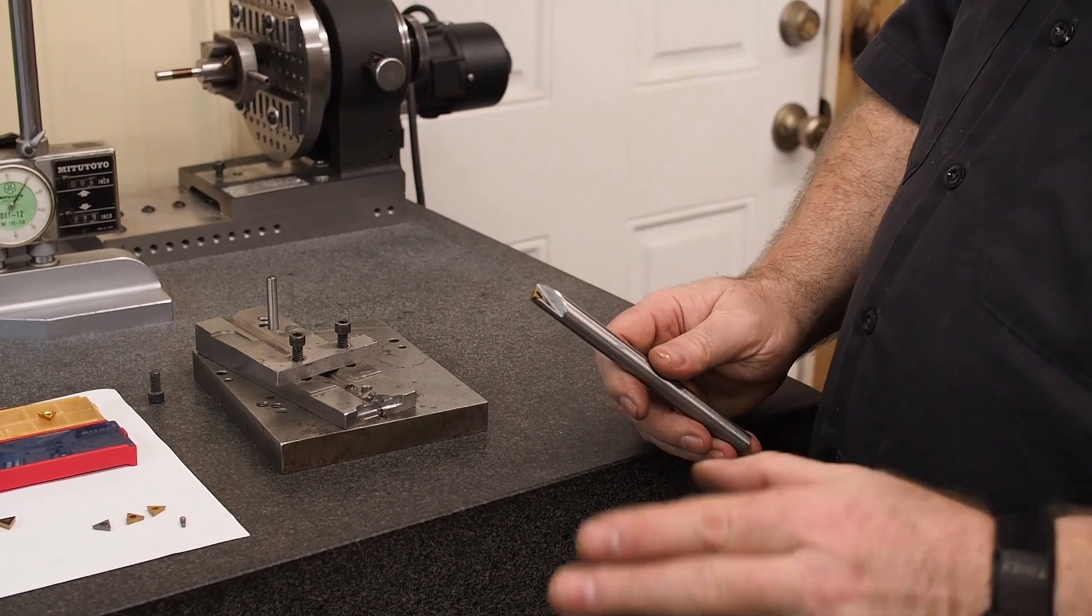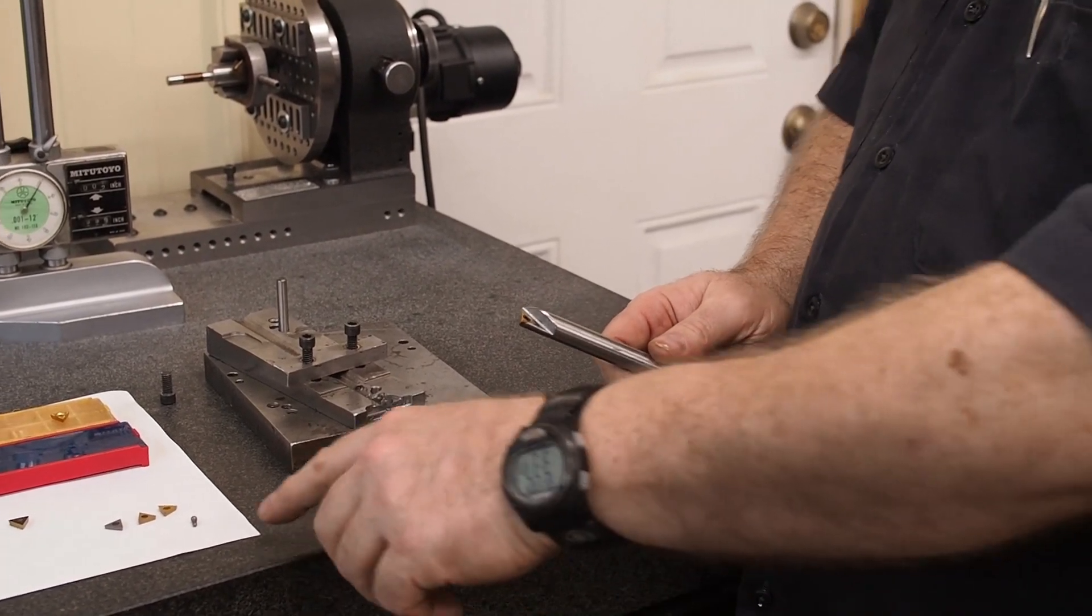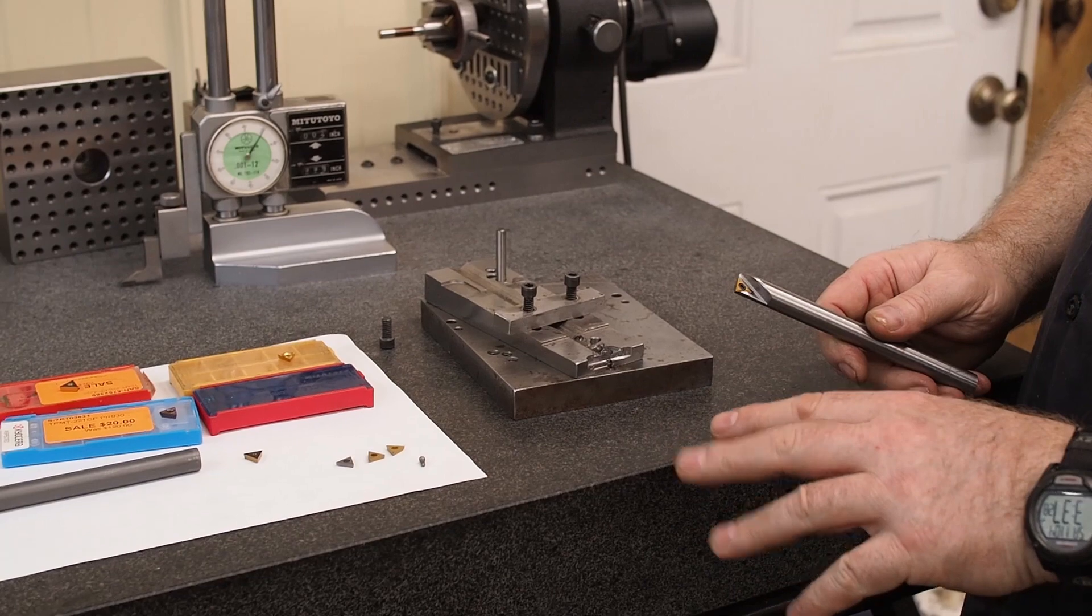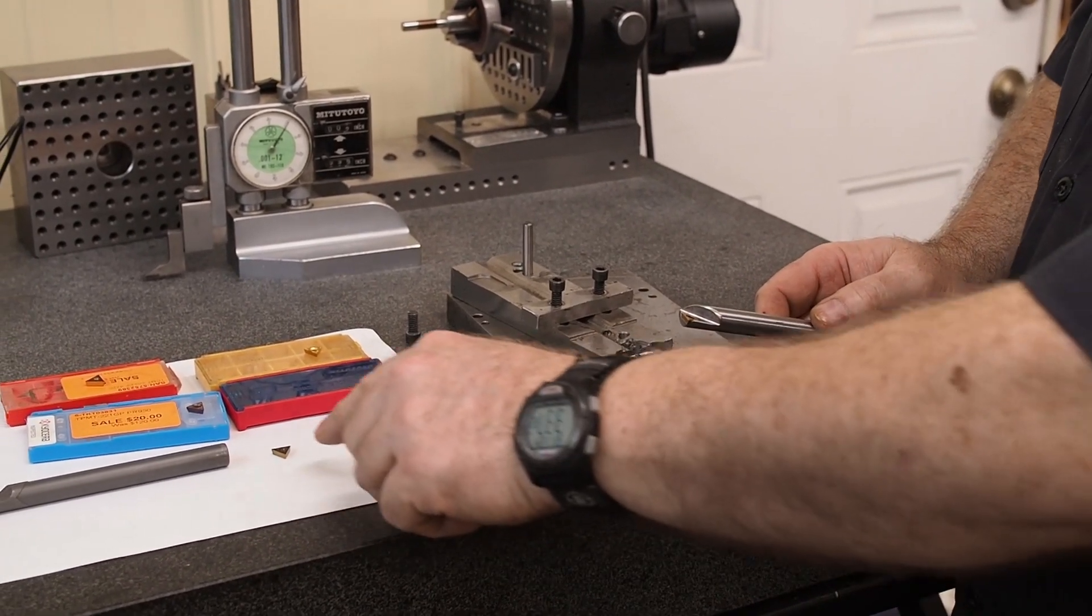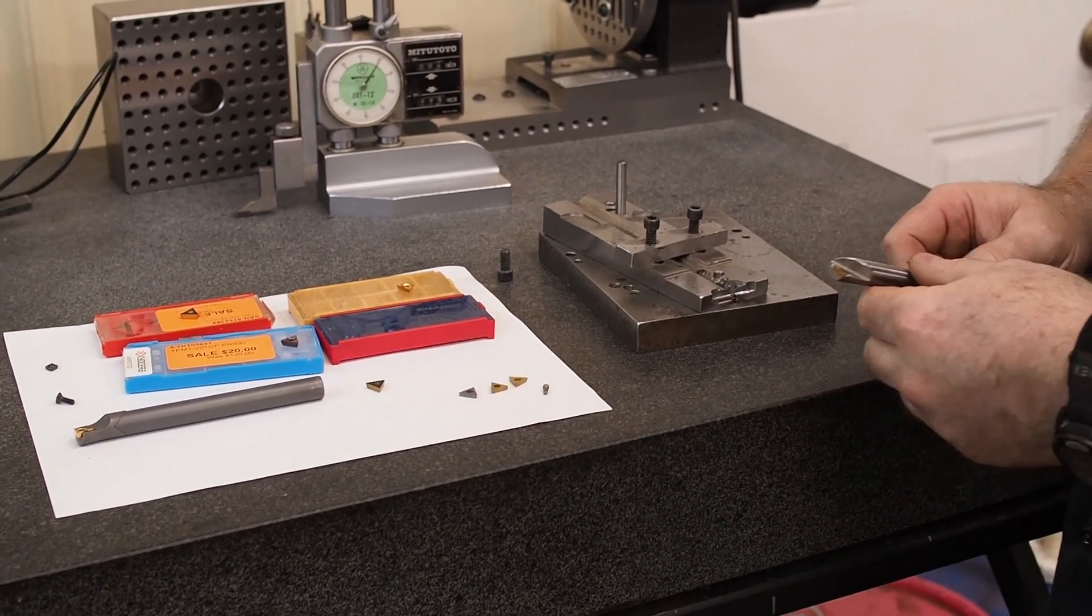When you make these bars that's the thing that you're going to have to keep in mind. What you want to do is pick out what insert that you want, design the bar around it and all your dimensions because all of these inserts they'll measure different.